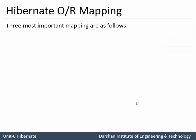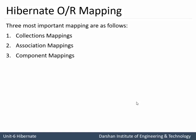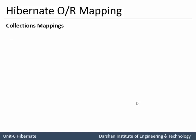Three most important mappings in Hibernate ORM are as follows: first is Collection Mapping, second is Association Mapping, and third is Component Mapping. I will be explaining each mapping type step by step.